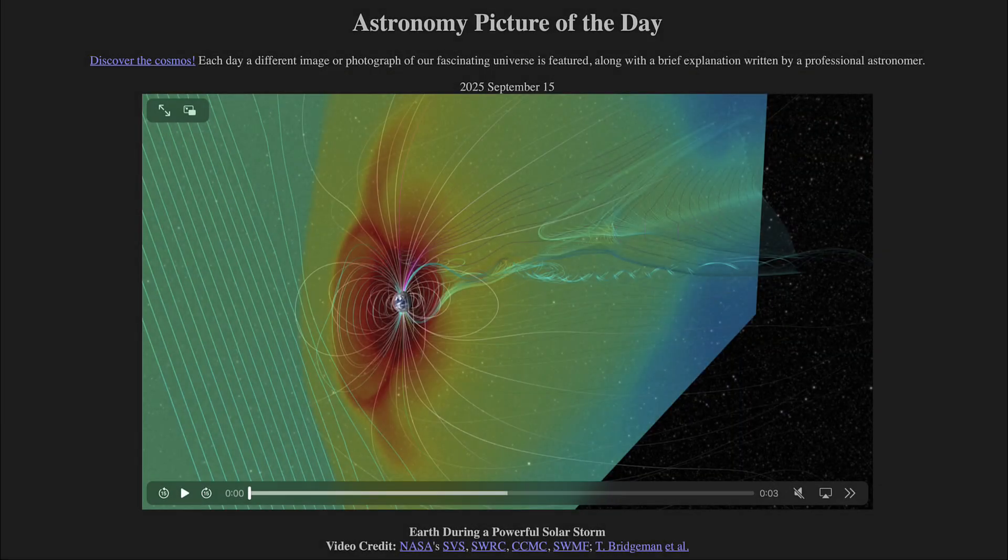Greetings and welcome to the Astronomy Picture of the Day podcast. Today's picture for September 15th of 2025 is titled Earth During a Powerful Solar Storm.